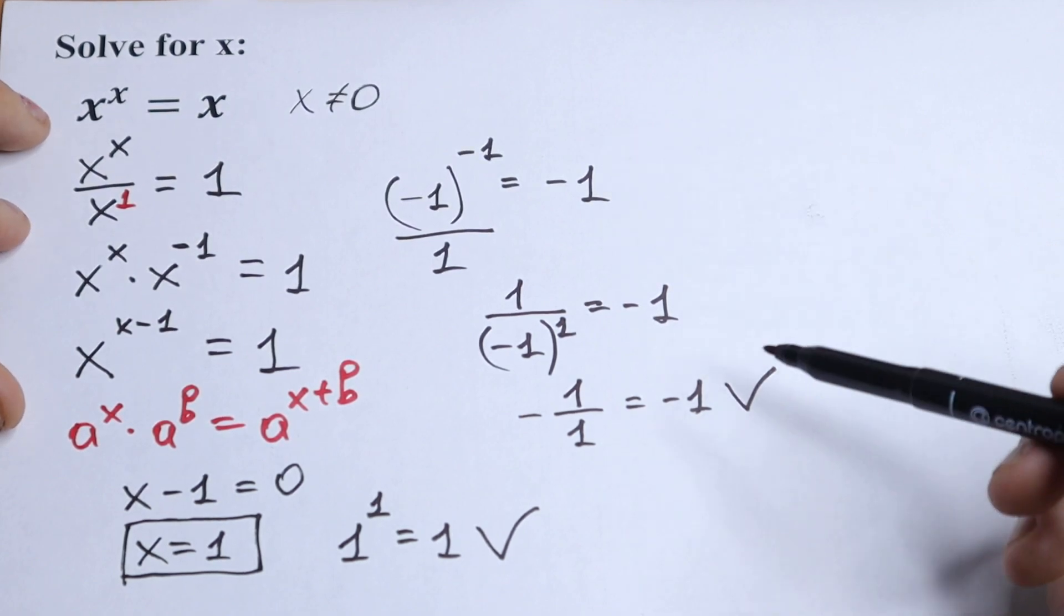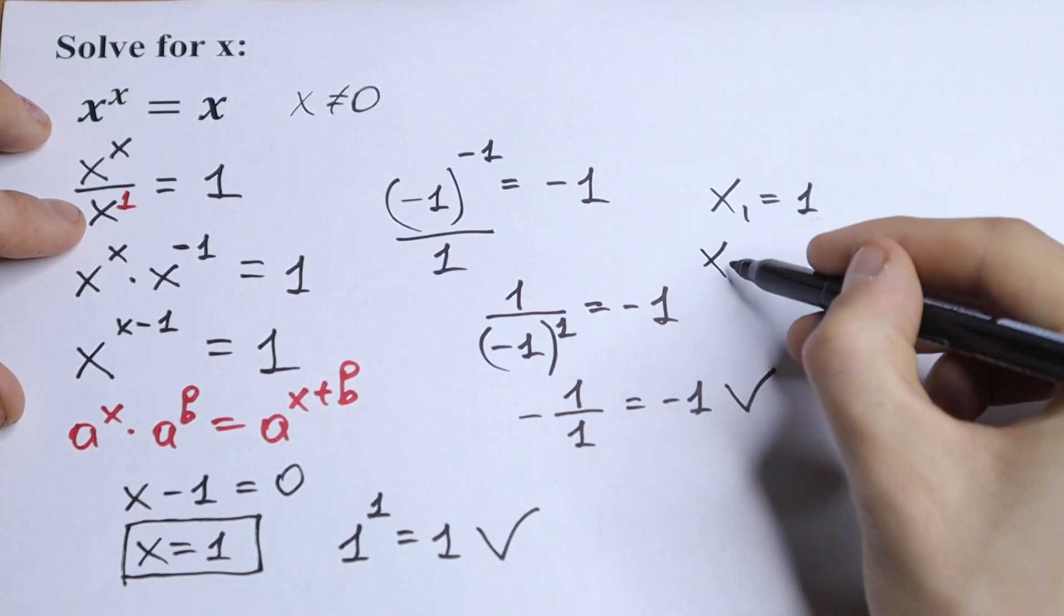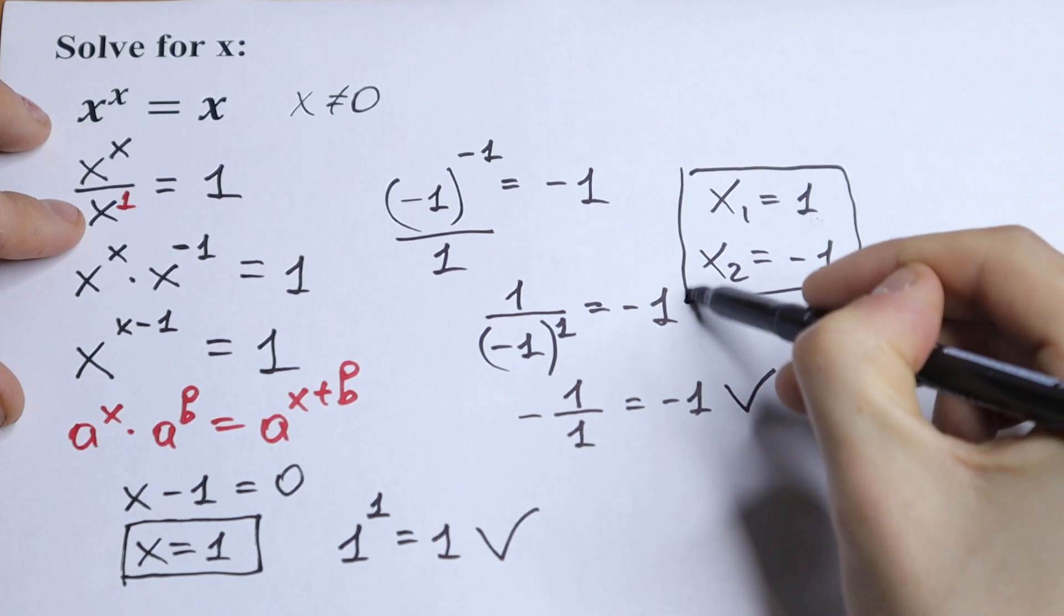So as you can see, minus one will be a good root for us. So we will have two roots: x first equal to one, and x second equal to minus one. And these are our two roots.